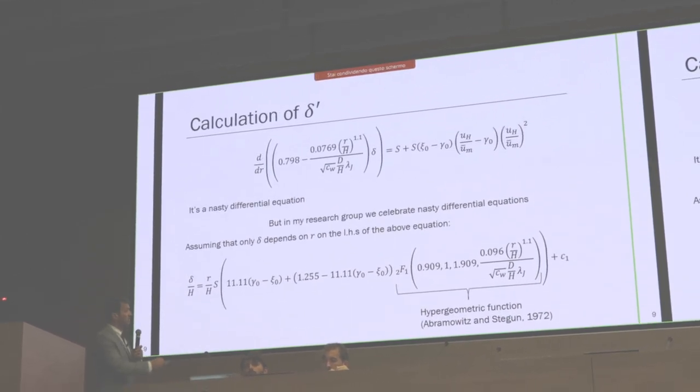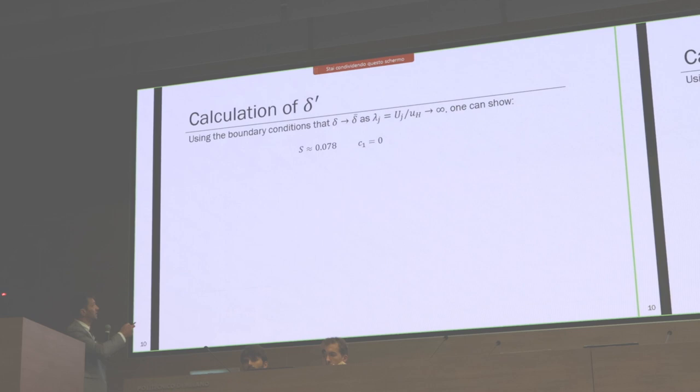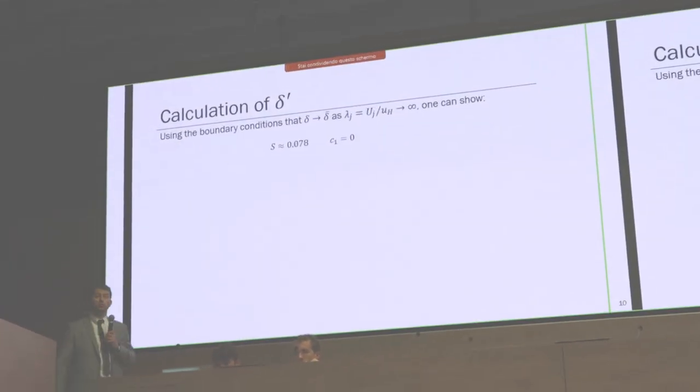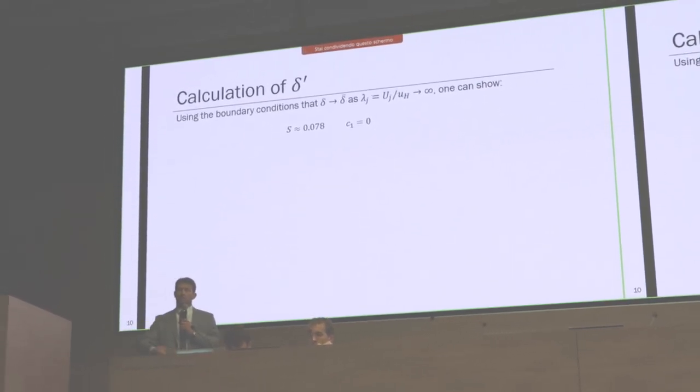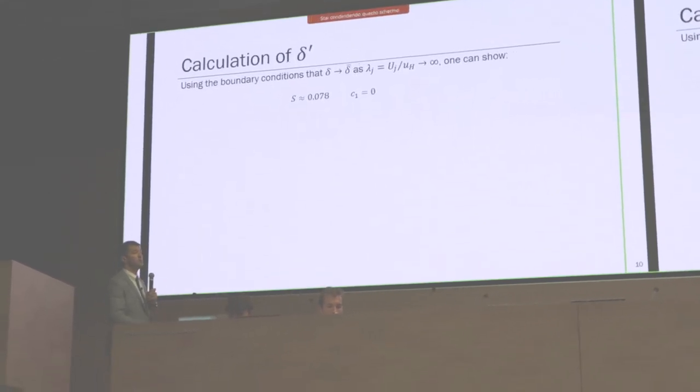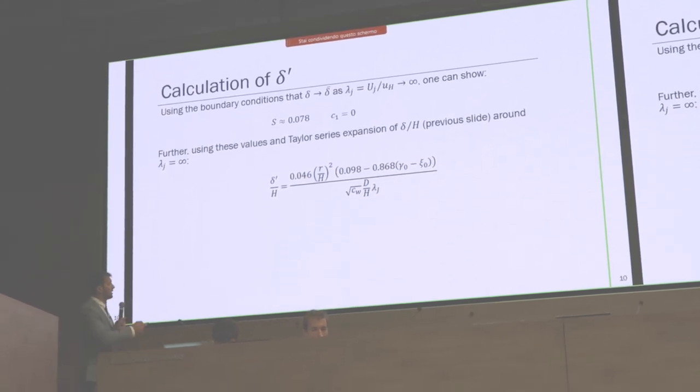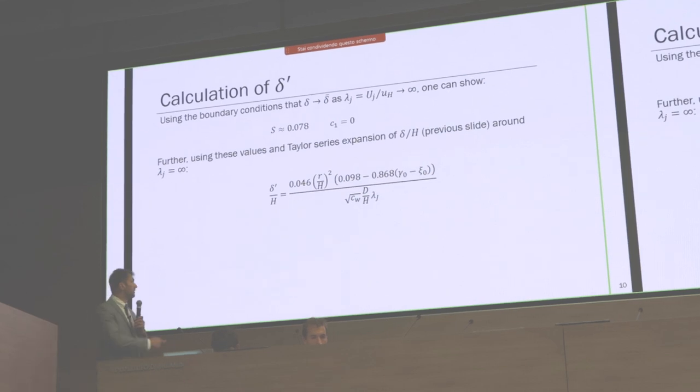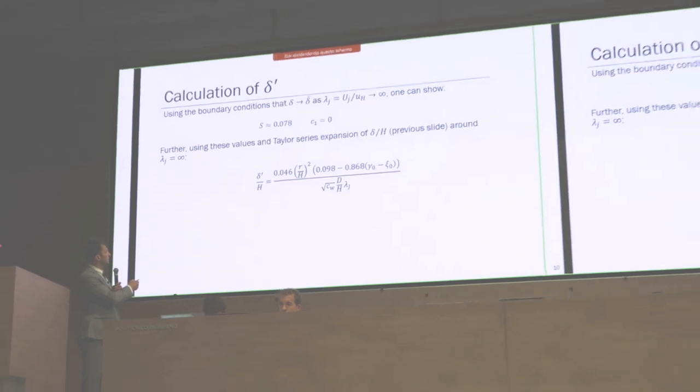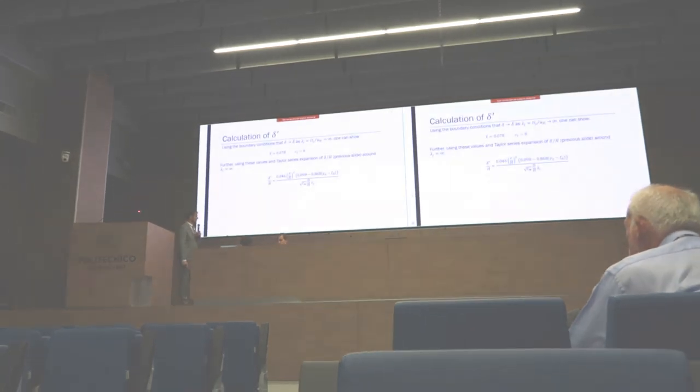We get another integration constant. However, using again our limiting case that delta needs to collapse to delta over bar, namely perturbations need to disappear once we terminate ABL winds, we were able to determine that S and C1 constants are these. Further, using Taylor series expansion, we can simplify the equation from the previous slide to this form. Now we know delta prime, we have closed form solution for delta prime, but we don't know these two functions.